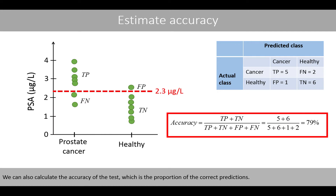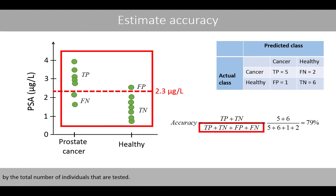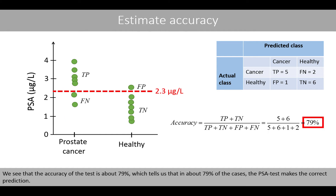We can also calculate the accuracy of the test, which is the proportion of correct predictions. To calculate the accuracy, we divide the total number of correct predictions — the sum of the true positives and true negatives — by the total number of individuals tested. The accuracy of the test is about 79%, which tells us that in about 79% of the cases, the PSA test makes the correct prediction.